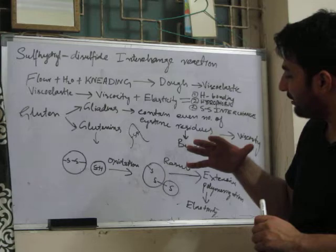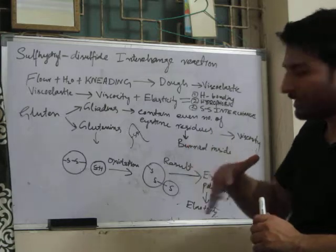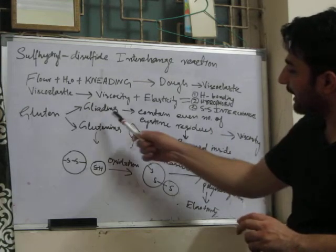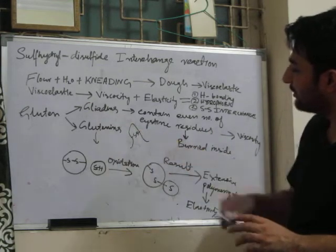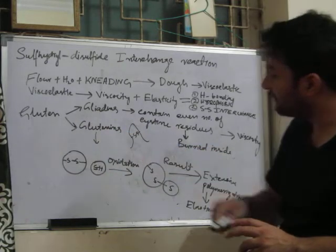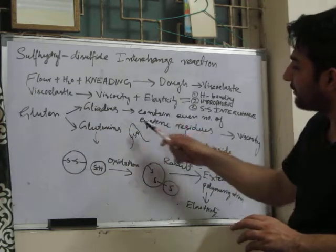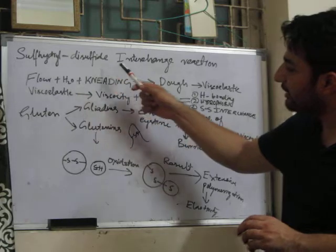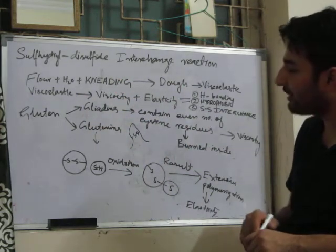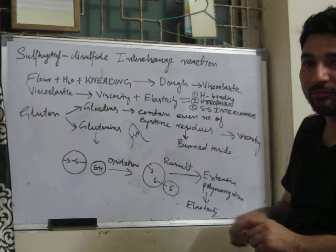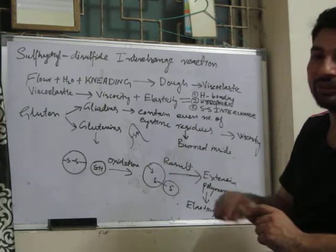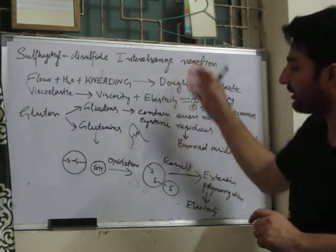The gliadins don't even expose while kneading. So the gliadins, the portion of the gluten, are not responsible for the sulphide disulphide interchange reaction, because their disulphide bonds are buried inside and they don't participate further in this reaction.